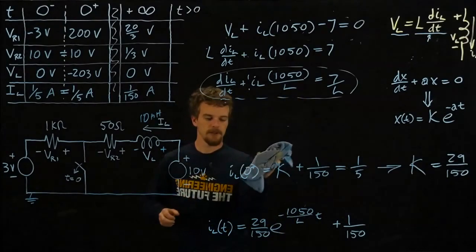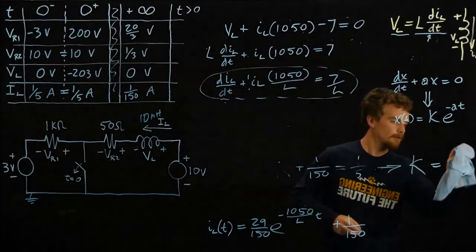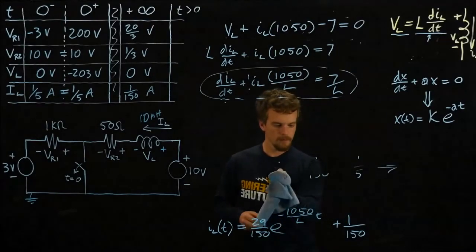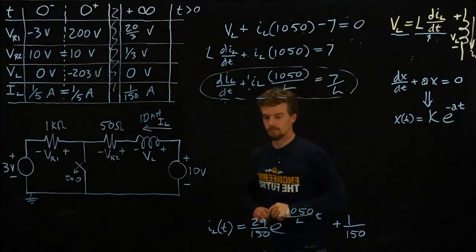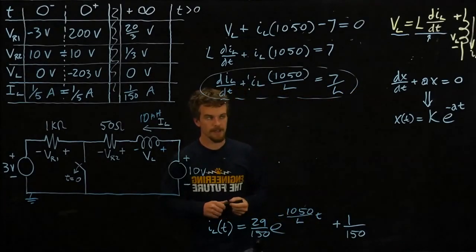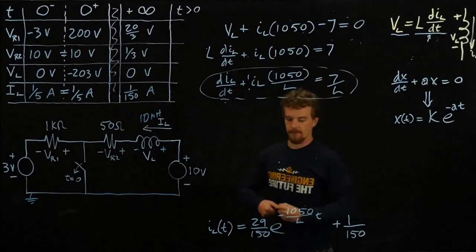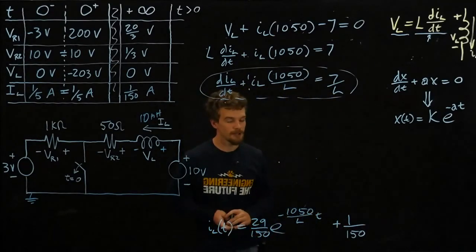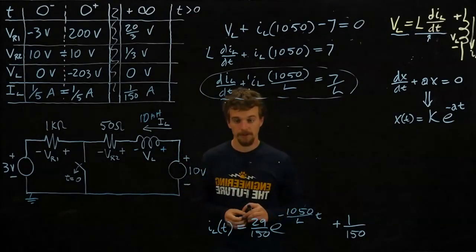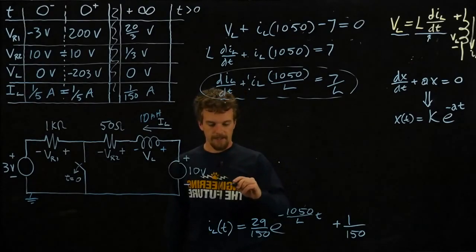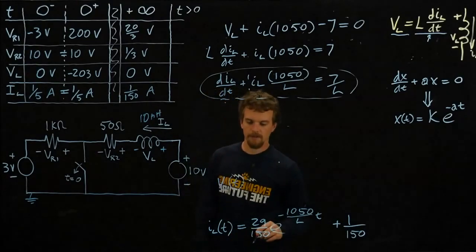Okay, so let's come up with some time expressions for our few other values. Let's try VL. So we know that VL is equal to L times dIL dt, and we have an expression for IL. So what would happen if we took the derivative of that and multiply it by L? We should get the voltage expression.